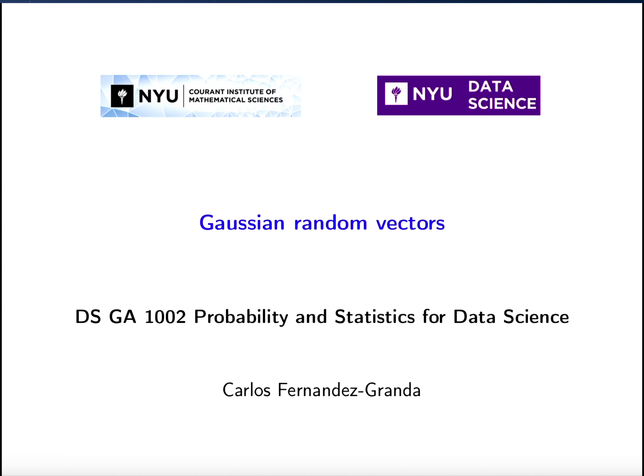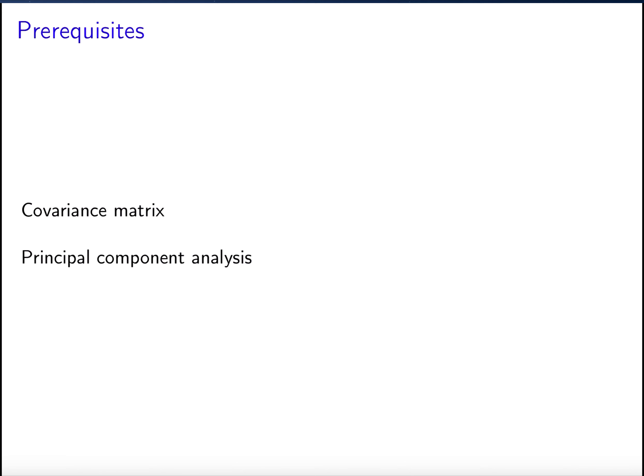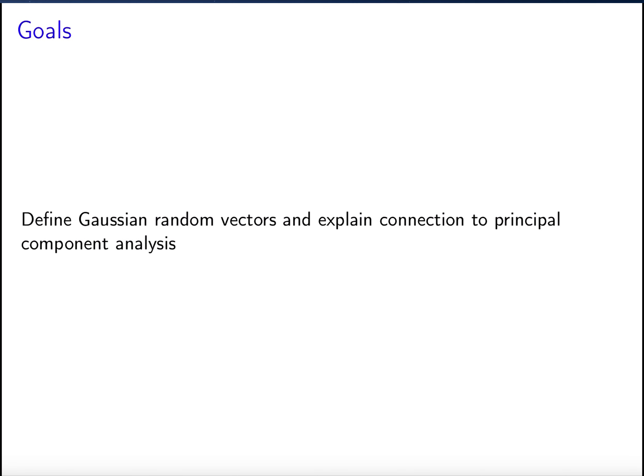Hello everyone. Today we're going to talk about Gaussian random vectors. The prerequisites for this material are covariance matrices and principal component analysis. The goal is to define Gaussian random vectors, explain their connection to principal component analysis, and provide some geometric intuition about what their density looks like.